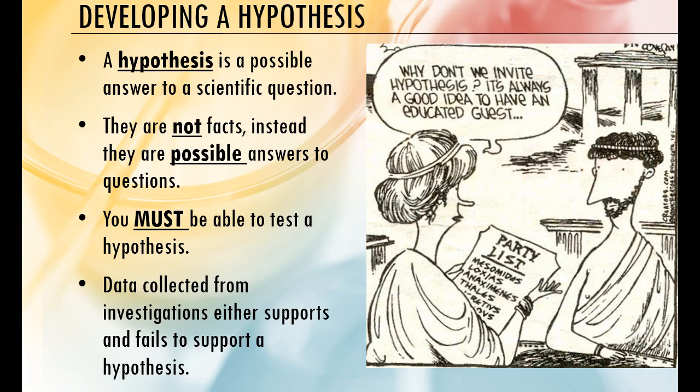A good hypothesis would be: if wavelengths of light are refracted in the atmosphere, then blue wavelengths of light are refracted the most. That's a possible answer to the question of why is the sky blue — it's not a fact. Hypotheses must be testable, and then your data from your observation or investigation either supports your hypothesis or fails to support it. This is the one part in any class where it's okay to be wrong — you learn just as much information either way.